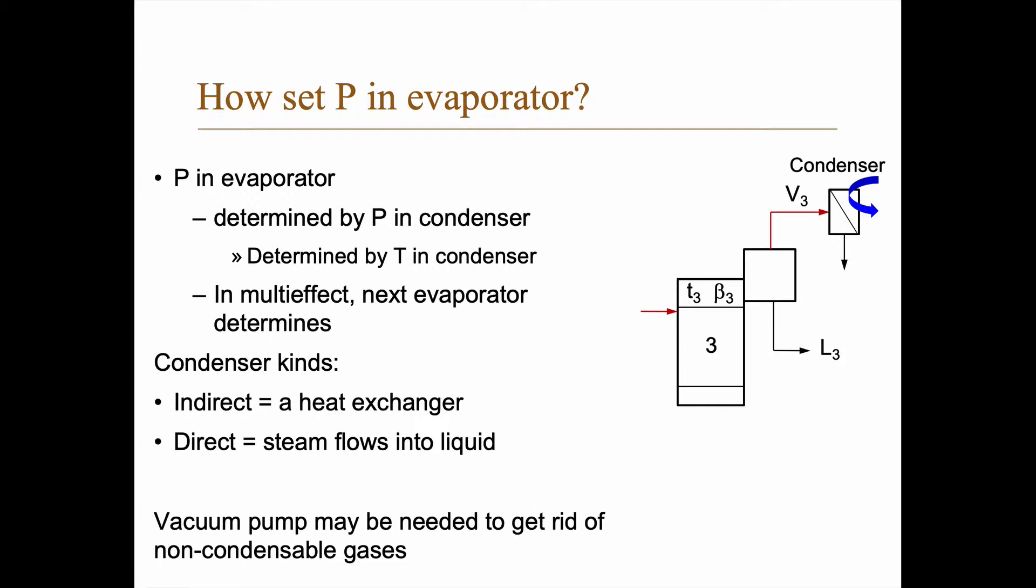There are different kinds of condensers, indirect where you have a heat exchanger or direct where you simply put the steam directly into a liquid. But if you have a multi-effect evaporator you have a whole series of evaporators. So the condenser only determines the pressure in the last and then the last evaporator somehow determines the pressure in the second last and so on.